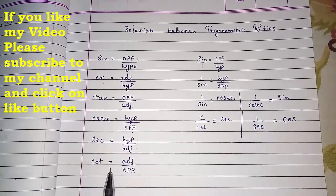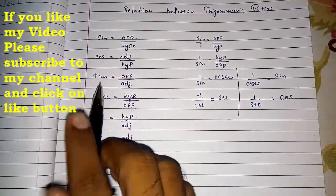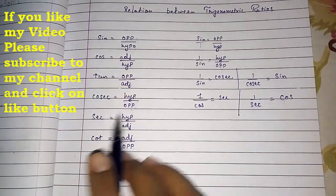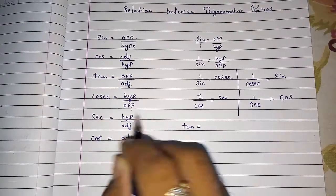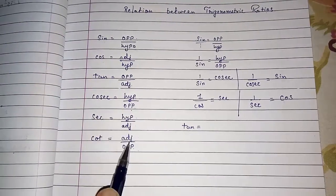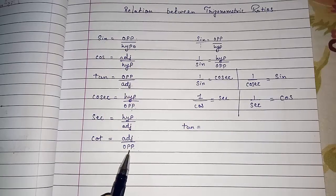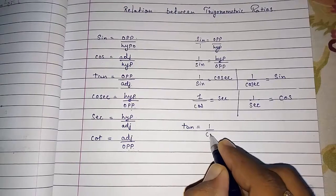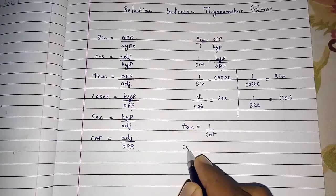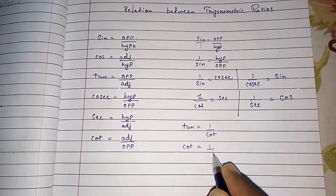But for tan and cot something different is there. We will get two things. Look here what. First if I want to find tan we know tan is opposite by adjacent and cot is adjacent by opposite. So directly I can write tan is equal to one by cot and cot is equal to one by tan.